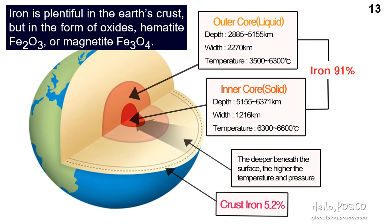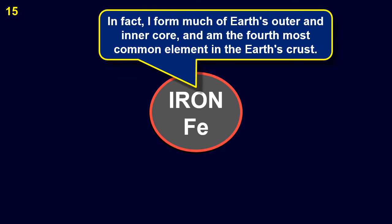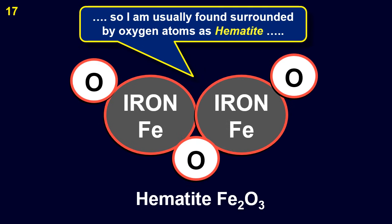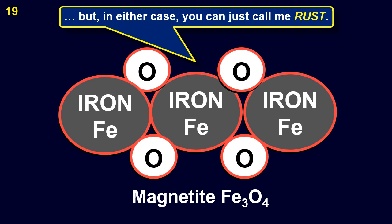Iron is plentiful in the Earth's crust, but in the form of oxides: hematite Fe₂O₃ or magnetite Fe₃O₄. Iron forms much of Earth's outer and inner core and is the fourth most common element in the Earth's crust. Unfortunately, iron has a very great appetite for oxygen, so it is usually found surrounded by oxygen atoms — as hematite Fe₂O₃ or by four oxygen atoms as magnetite Fe₃O₄. In either case, it is what we call rust.